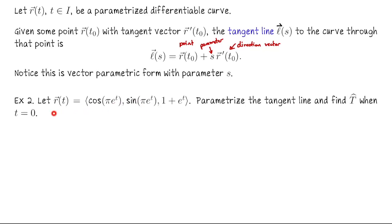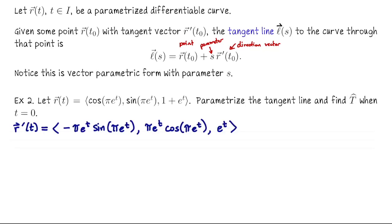Let's look at this example. We have R(t) = (cos(πeᵗ), sin(πeᵗ), 1 + eᵗ). We want to parametrize the tangent line and find the unit tangent vector at t = 0. The first thing we need is R'(t). Differentiating coordinate by coordinate using the chain rule, we get R'(t) = (−πeᵗ sin(πeᵗ), πeᵗ cos(πeᵗ), eᵗ).